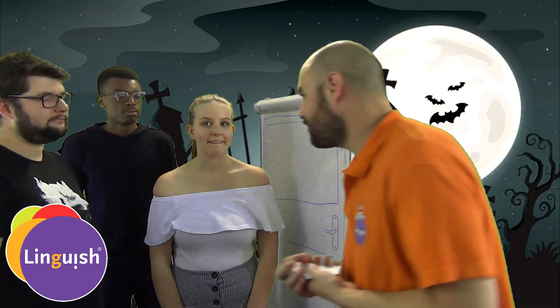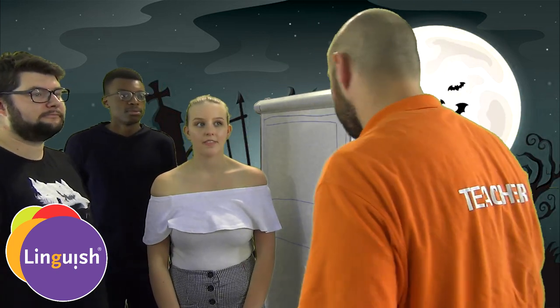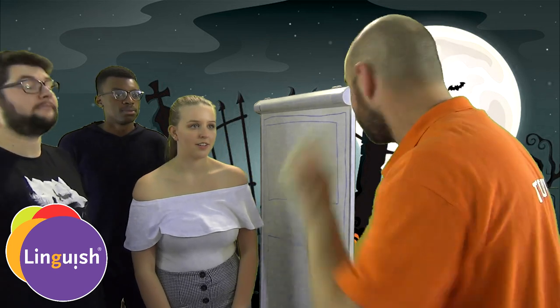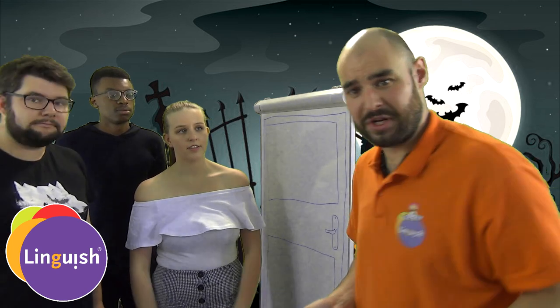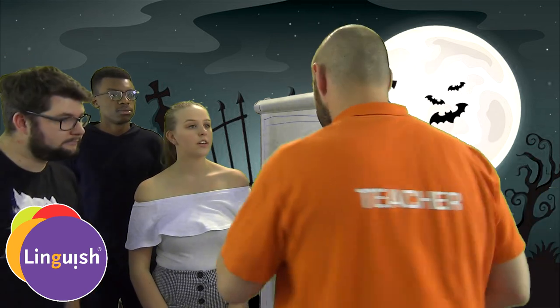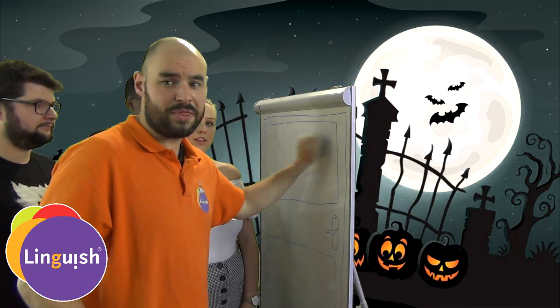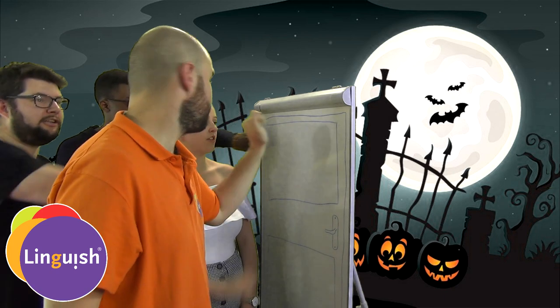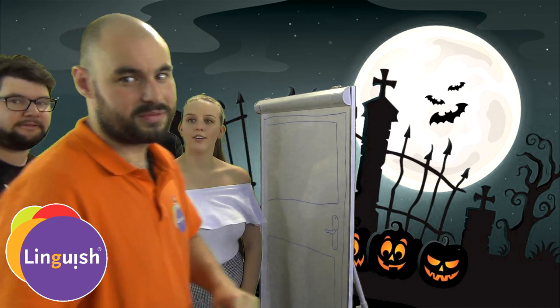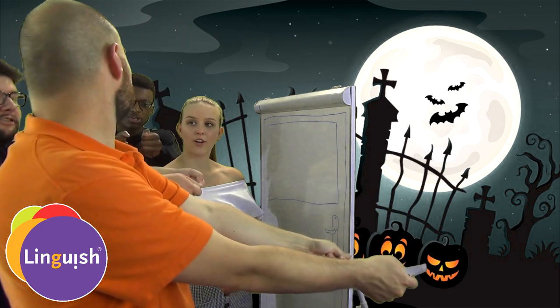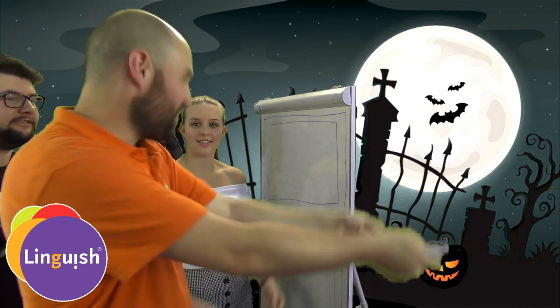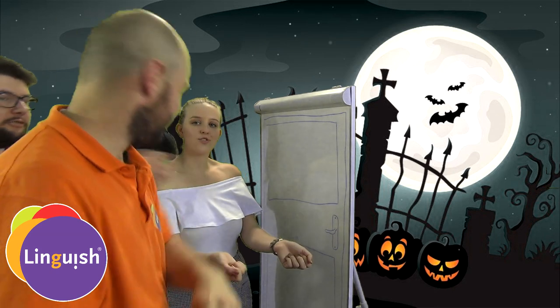What's going to happen is you are going trick-or-treating. So, the steps to go trick-or-treating: number one, knock on the door. Someone opens the door. We say trick-or-treat, trick-or-treat.